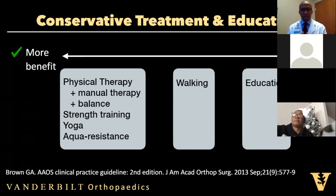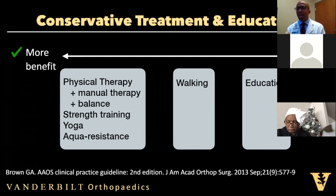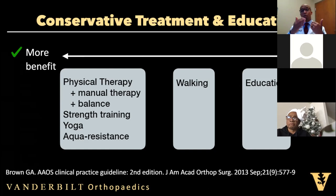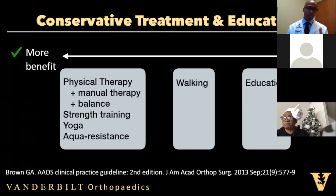So weight-bearing resistance exercise is protective. Although not compared head-to-head, physical therapy with the inclusion of manual therapy like massage — if there are range of motion limitations — and a real focus on balance has been shown to be equally helpful. The stronger a person's ability to balance, the less likely they'll have that microscopic shearing happening at the joint. Strength training at the gym, yoga, and aqua resistance have all been shown to be helpful. But if a person is not already conditioned for exercise at the gym, physical therapy is where you want to start. These are more effective than walking — walking is better than nothing, but physical therapy and strength training is better.